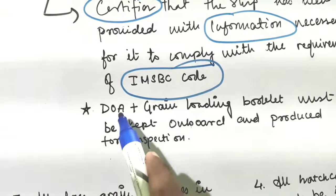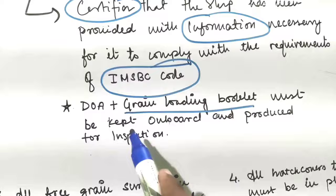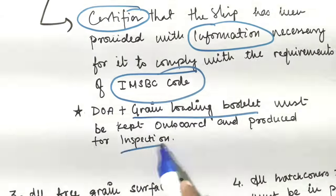The Document of Authorization plus the grain loading booklet must be kept on board and produced for inspection.